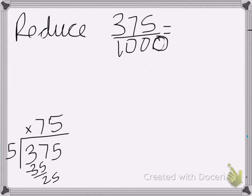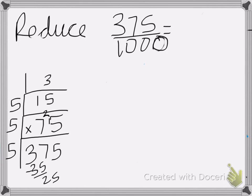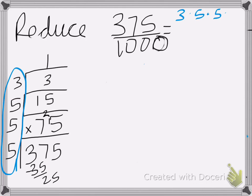We're going to divide that by 5. 5 goes into 7 once, that's 5. 7 minus 5 is 2, bring down 5. 5 goes into 25, 5 times. Divide by 5 again and we get 3. Then we're going to divide the 3 by 3 and end up with 1. So my prime factorization is 3 times 5 times 5 times 5.